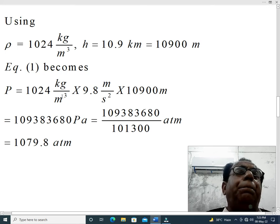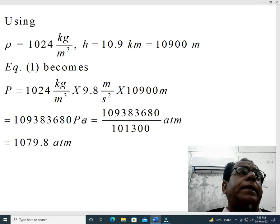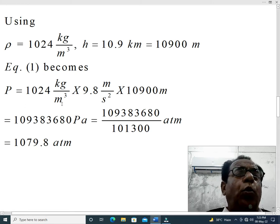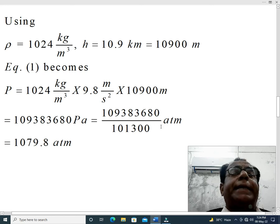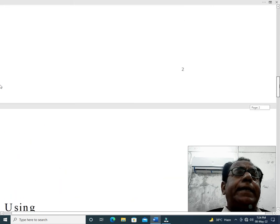This will become equal to 109383680 Pascal. We have simplified this expression. Here, meter into meter, meter square will be subtracted from meter cube and single meter will be left in the denominator. So our unit will be kilogram per meter second square. And we know that kilogram per meter second square is equal to Pascal, which alternatively also can be written as Newton per meter square. So, we have simplified this calculation and converted kilogram per meter second square into Pascal because one Pascal is equal to kilogram per meter second square.